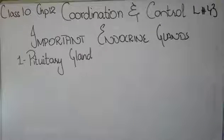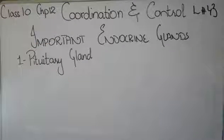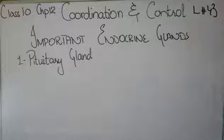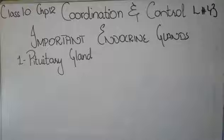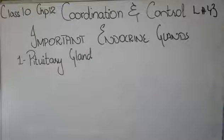Now in today's lecture, we are going to study the important endocrine glands. In our body, there are some important endocrine glands which play a very important role in various different processes, like growth, reproduction, sugar regulation, and kidney function. The endocrine glands participate in these processes to regulate them depending on the situation in the surroundings.